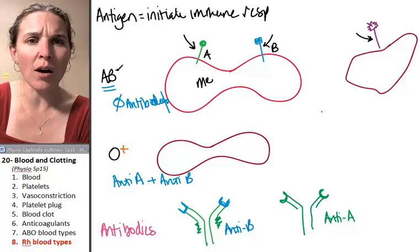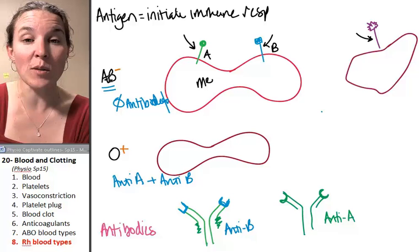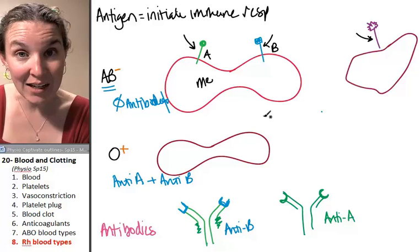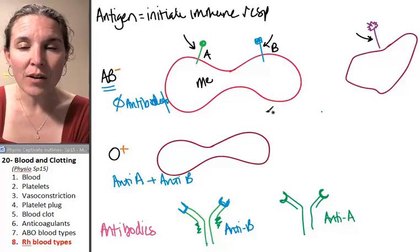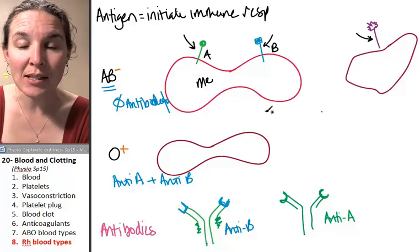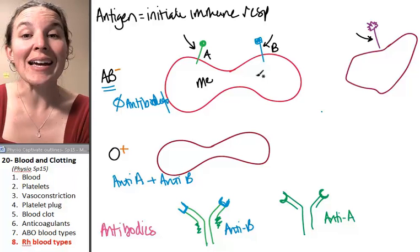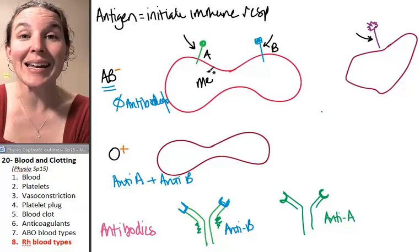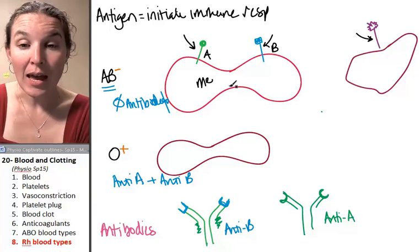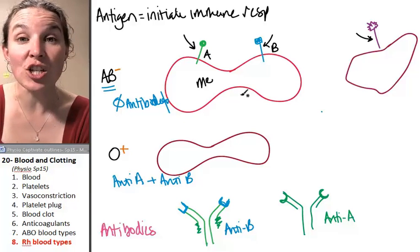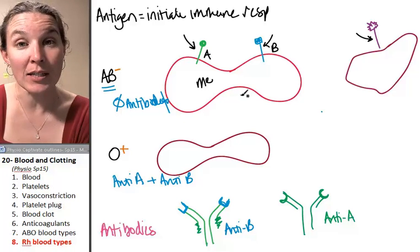Some people are negative, so this person might be AB negative. Negative means the absence of the RH antigen. So a person who has type negative blood has no RH antigen embedded in their blood cells.